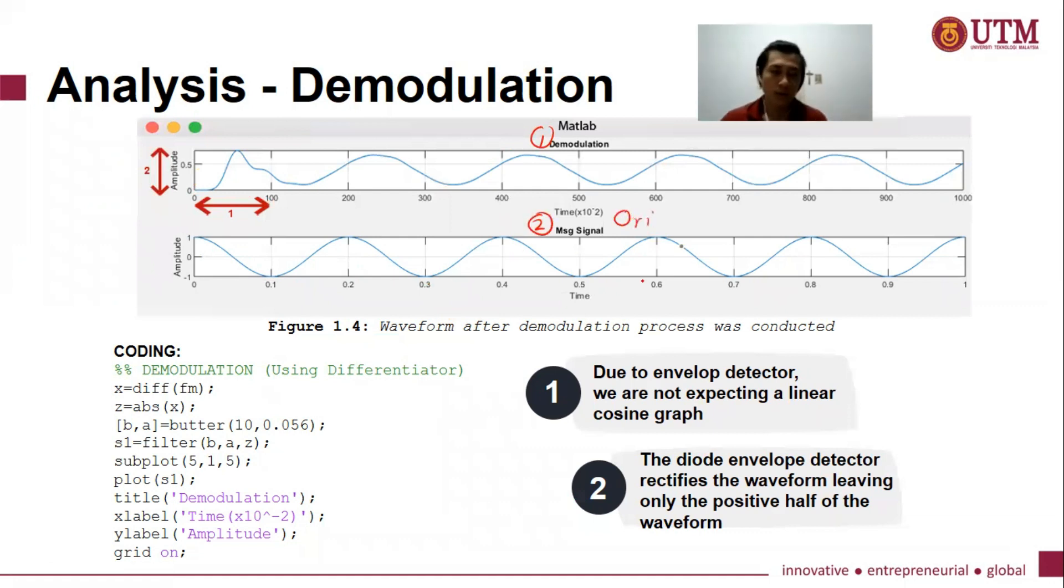So in the coding, we are actually using the differentiator method, which consists of differentiator and envelope detector. So what is a differentiator? Differentiator is to convert FM signal to AM signal by differentiating its signal frequency. So after the process of differentiator, we will go to the envelope detector.